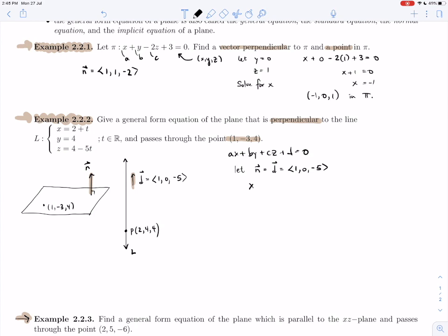Which means that our equation is going to be, well, A is 1, so 1x plus 0y minus 5z plus D is equal to 0. We have to solve for this D. There is one piece of information that we have not used. We want our plane to contain the point 1, minus 3, 4. So we are going to plug in 1, minus 3, 4 into the equation and solve for our missing parameter D. So X is 1 minus 5 times 4, plus D is 0. So minus 19 plus D is 0. D is 19.